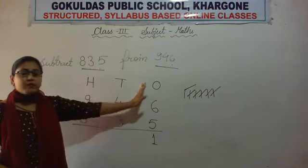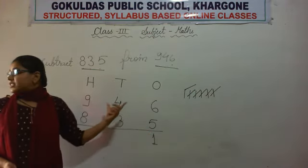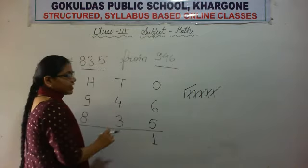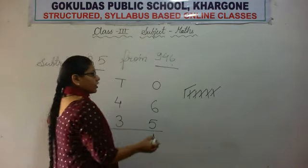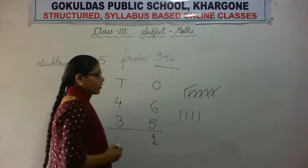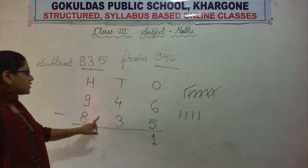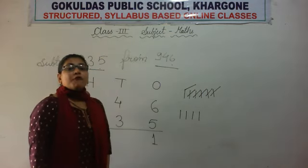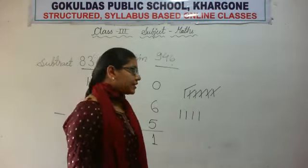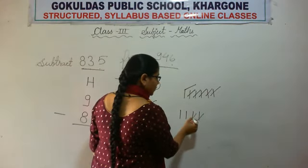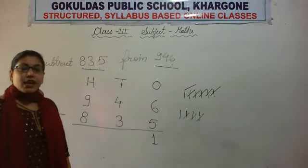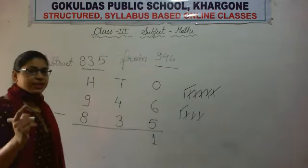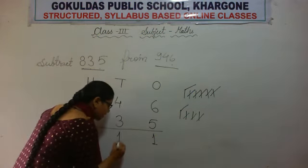Now it's time for the tens column. The first number is 4, so we draw 4 sticks. Minus 3 — we cancel out 3 sticks. Only 1 stick is left, so we write 1.